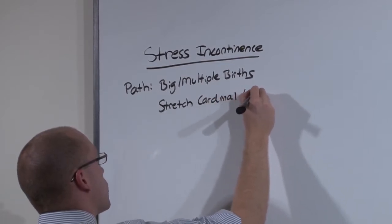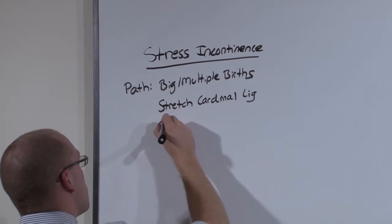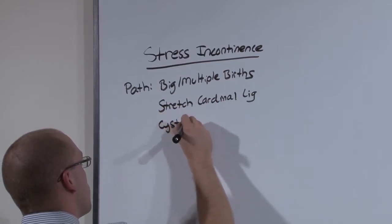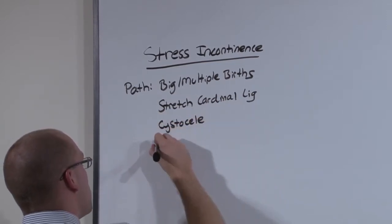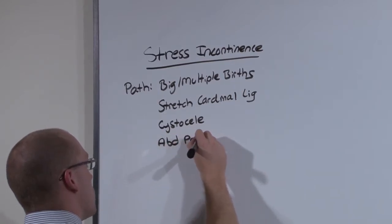And the cardinal ligament is what keeps the bladder and the uterus connected. And so a patient develops a cystocele, and then abdominal pressure becomes translated only to the bladder.